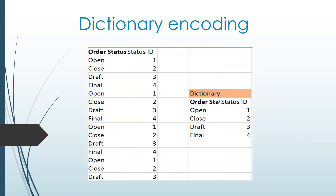Here you can see how dictionary encoding works. We have a table with different statuses: open, close, draft, and final. We assign each status an ID — open gets 1, close gets 2, draft gets 3, and final gets 4. We then replace the original status values in the table with these IDs. So instead of storing 'open', 'close', 'draft', we just store 1, 2, 3, 4, and so on. This saves memory.